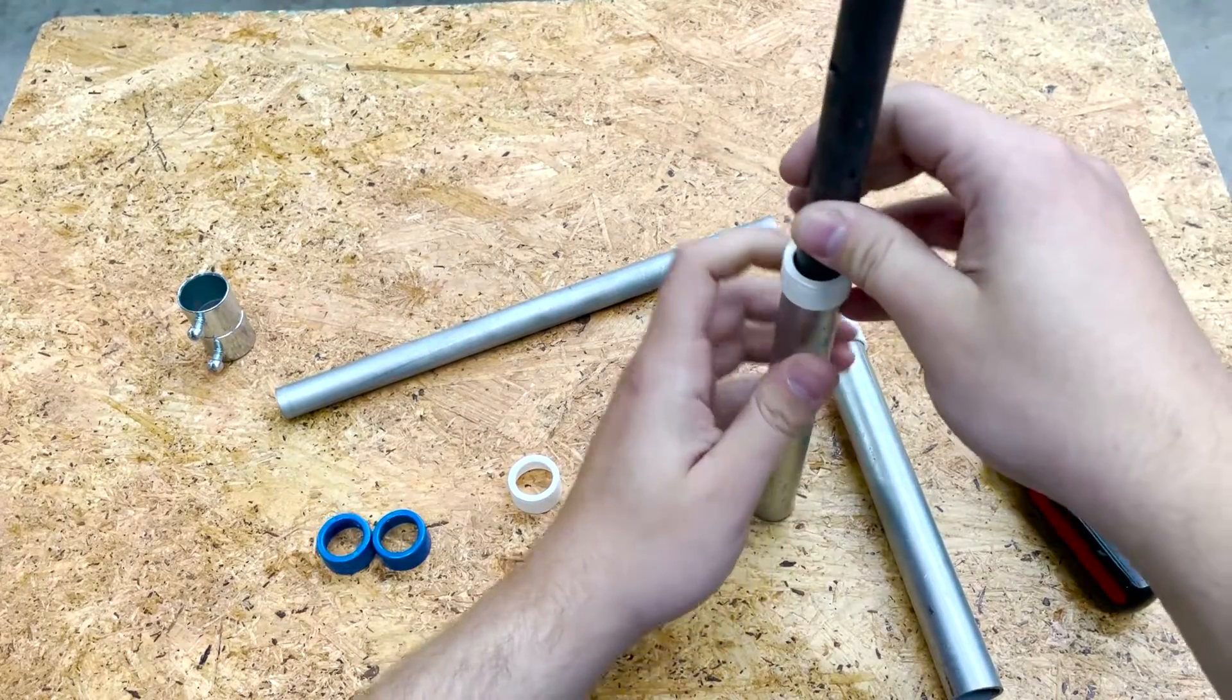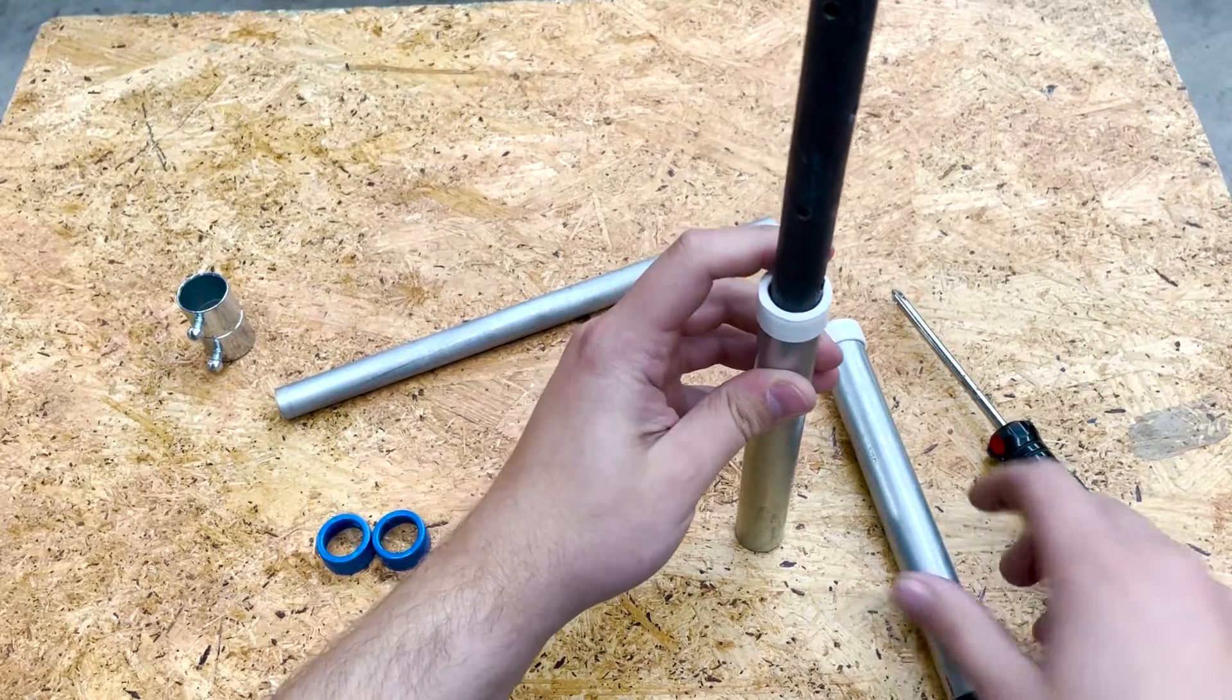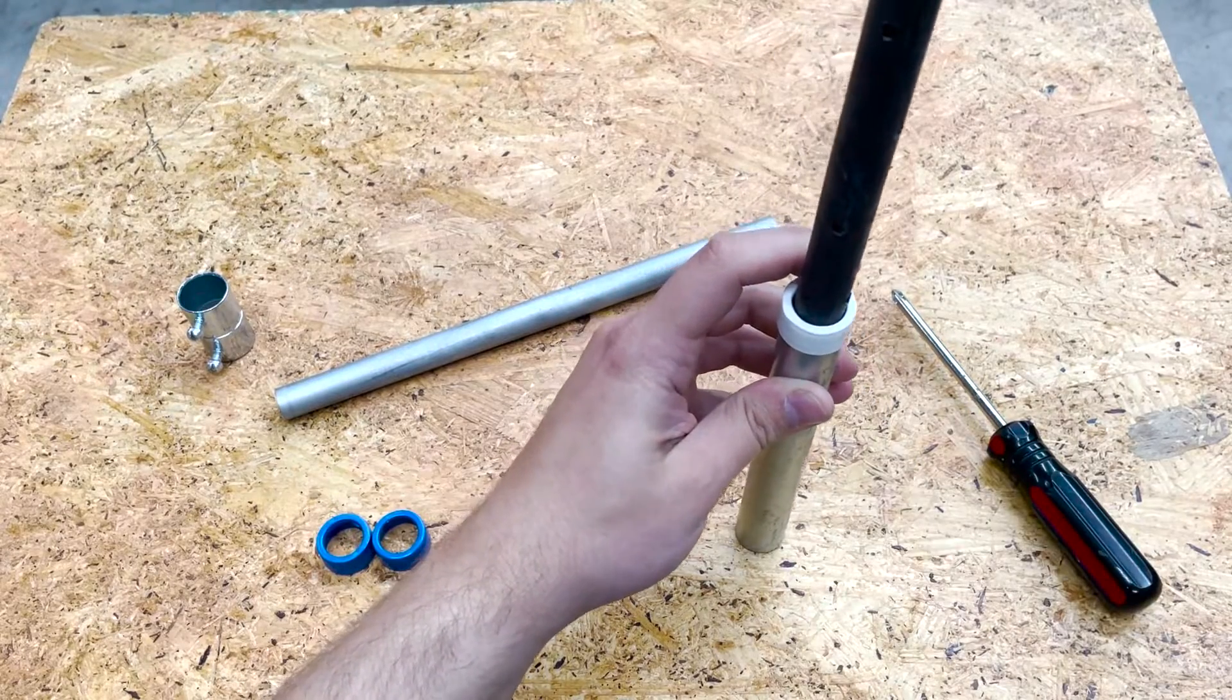They used these rebar pins, which you can also get locally off the shelf, to basically create a rigid joint between the two pieces of conduit.